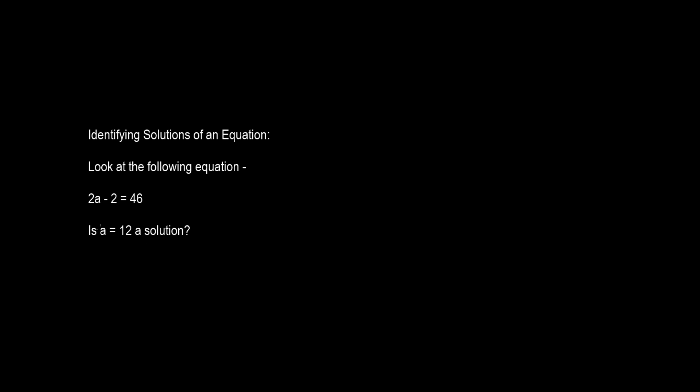Well, we have to substitute the variable a for the value of 12 to find out whether a equals 12 is a solution or not. So let's go ahead and write down 2 and then write 12 for a minus 2 is equal to 46. 2 times 12 is 24 minus 2 is equal to 46. 24 minus 2 is 22, which is not equal to 46. Therefore, a equals 12 is not a solution.